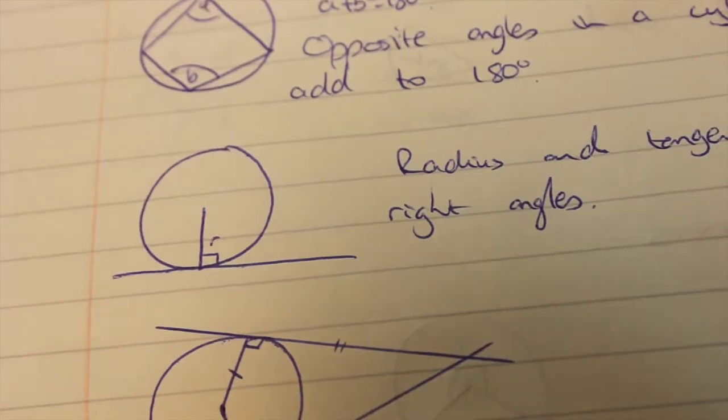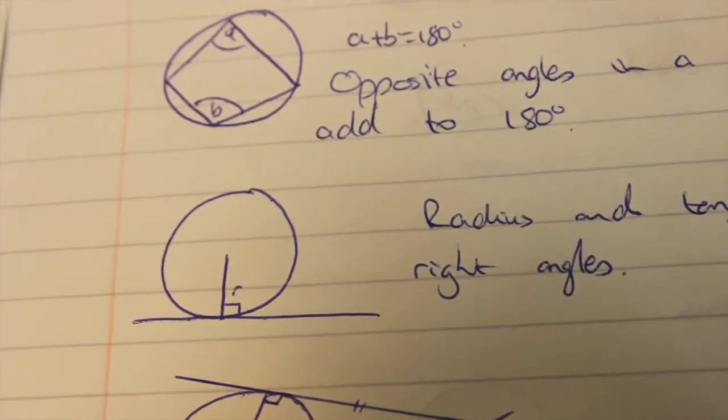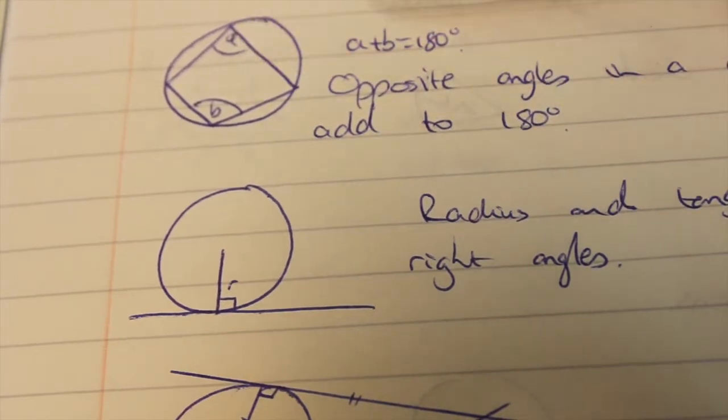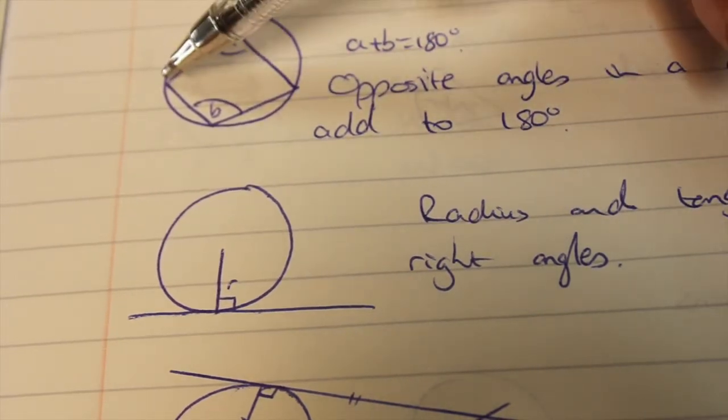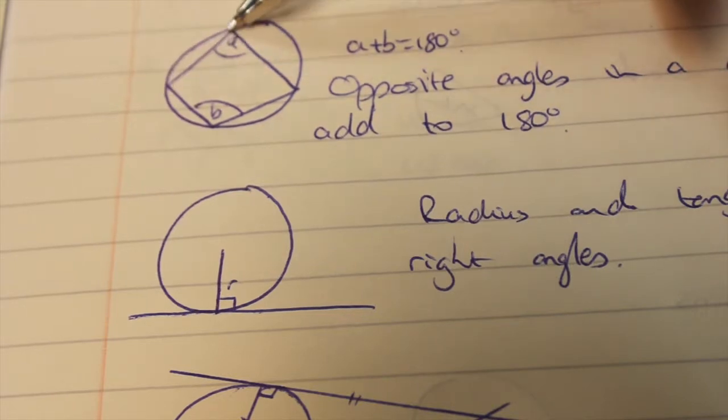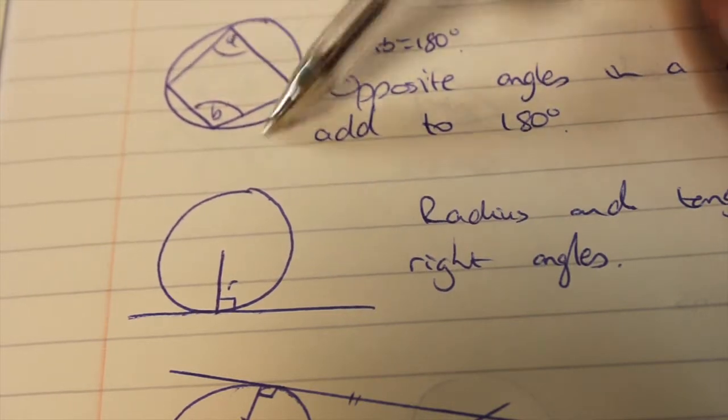The cyclic quadrilateral in this one opposite angles add to give you 180. In a cyclic quadrilateral each corner must hit the outside of the circle.